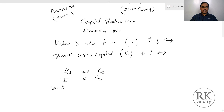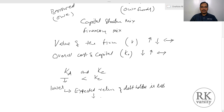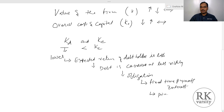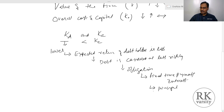Why is the cost of debt lower than the cost of equity? Because the investors' expected return for debt holders or bond holders is less. Debt is considered less risky compared to equity because debt is an obligation from the perspective of the company, on which fixed periodic payments are made in the form of interest, and at the end of the term period the principal amount is repaid. In addition, many times debt is a secured loan or secured lending. Because of these reasons, the cost of debt is cheaper compared to the cost of equity.